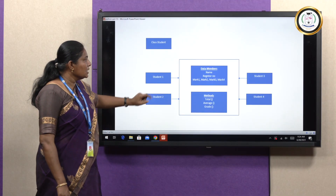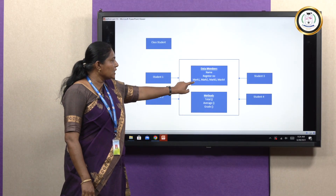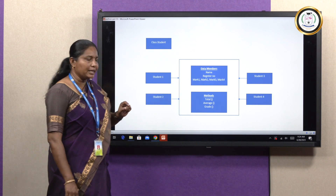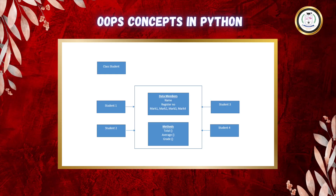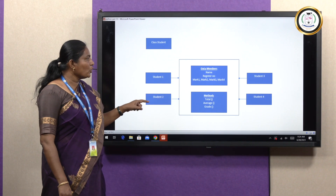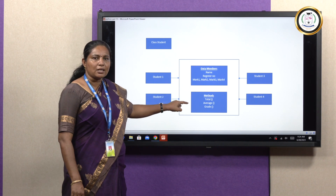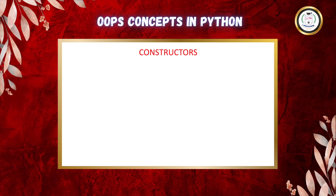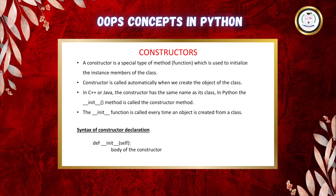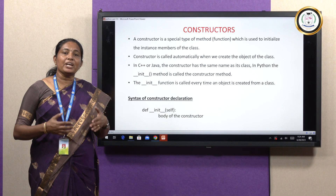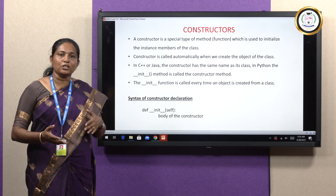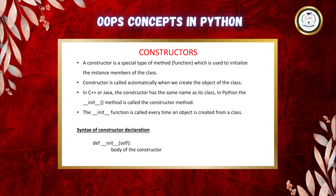Here, student is a class which contains name, register number, mark 1, mark 2, mark 3, and mark 4 as data members. Total, average, and grade are methods of the class student. I created four objects: student 1, student 2, student 3, and student 4. These four objects share the data members and methods of the class student. Next is constructor. A constructor is a special method which is called automatically when we are creating an object of a class.